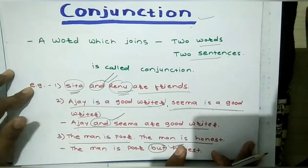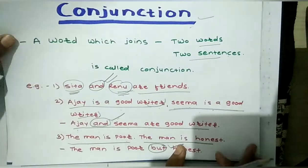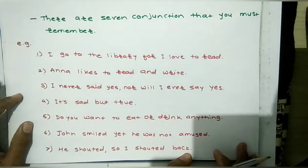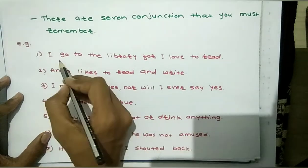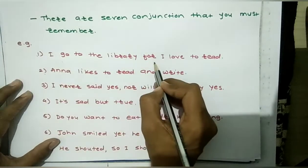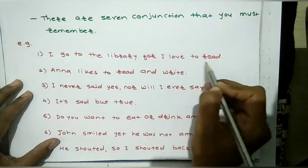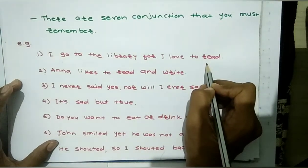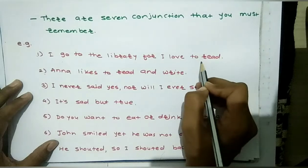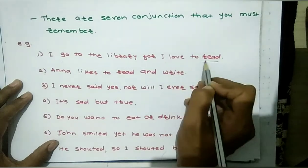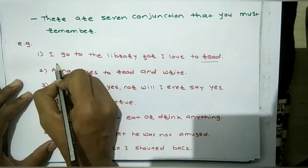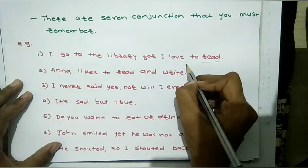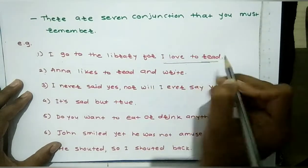There are 7 conjunctions that are the most important. Let's see which they are. First example: 'I go to the library for I love to read.' Here, 'for' is conveying a reason — why am I going to the library? Because I love to read. Second example: 'Anna likes to read and write.' Anna has two hobbies but one sentence. This combines 'Anna likes to read' and 'Anna likes to write' into one sentence using 'and.'